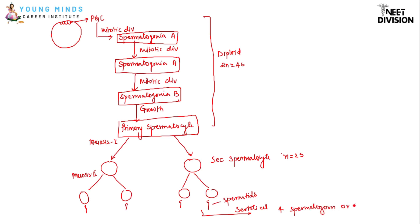These four spermatids, after getting nutrition from Sertoli cells, convert into four spermatozoa, also called sperm. So the whole process of spermatogenesis involves: primordial germ cells migrating into seminiferous tubules → mitotic divisions → spermatogonia A → spermatogonia B → growth → primary spermatocyte → meiosis I → two secondary spermatocytes → meiosis II → four spermatids → four spermatozoa.